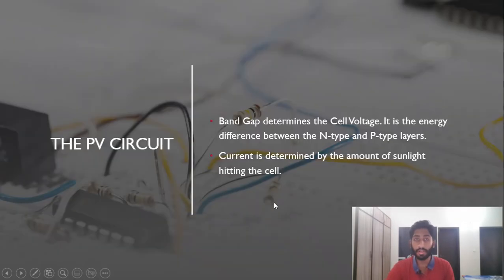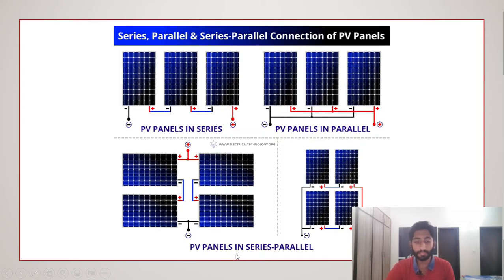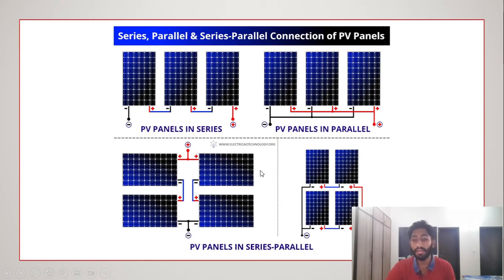In a combined series-parallel connection, on the top you see positive-to-positive connections, and on the bottom negative-to-negative, with negative-to-positive connections between rows — that creates a series-with-parallel configuration. The same applies with landscape or portrait oriented modules: negative terminals join to the negative output, positive terminals join to the positive output, with series links between rows.